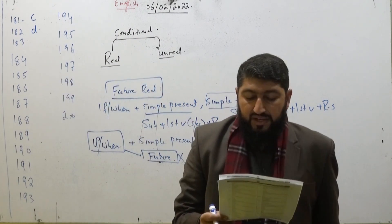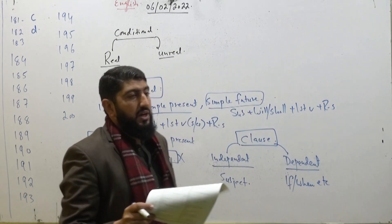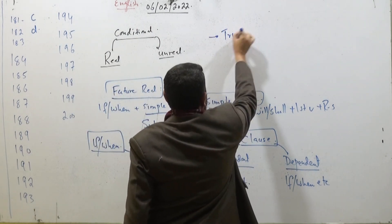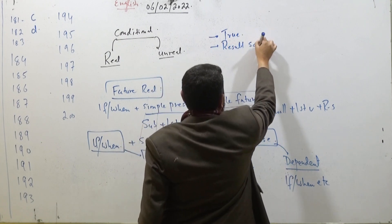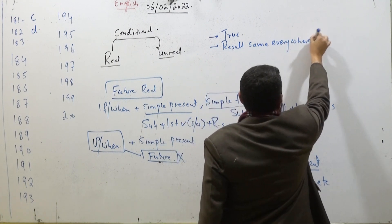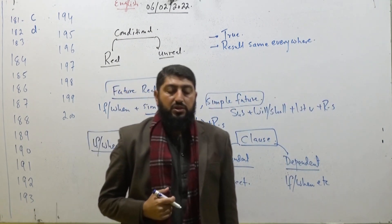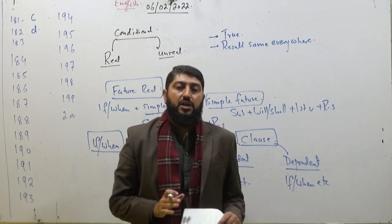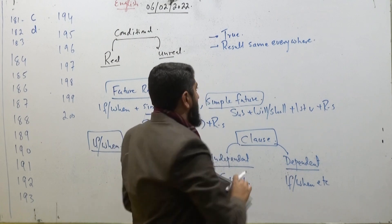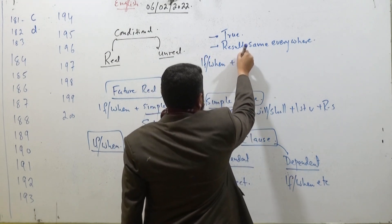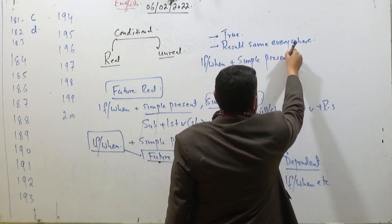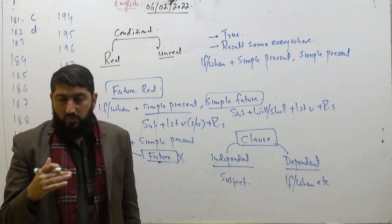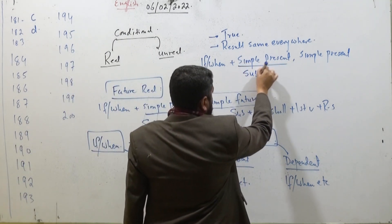MCQ 183: 'If you heat a metal dish, dash.' This is present real. When you have a situation that is true or whose result is the same everywhere — if you are in Pakistan, India, or America — and you do an experiment and the result is always the same with no difference, remember that both structures will be: if/when plus simple present, and the second structure is again simple present.